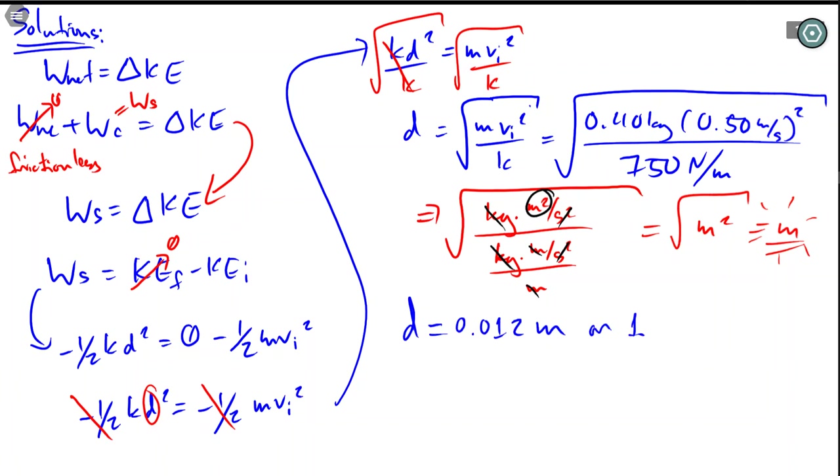Or you can do 1.2 times 10 to the negative 2 meters, or the book actually has it like this: 1.2 centimeters. Either way that is our final answer.